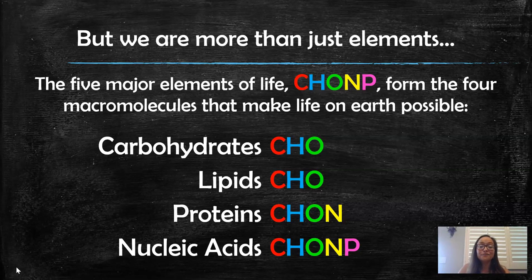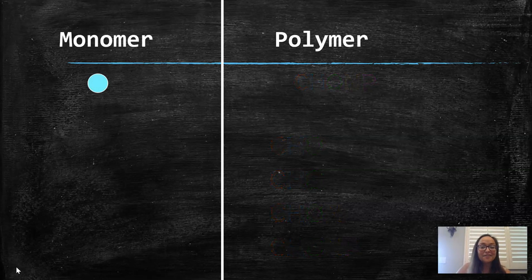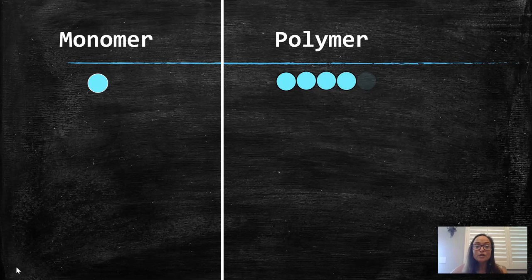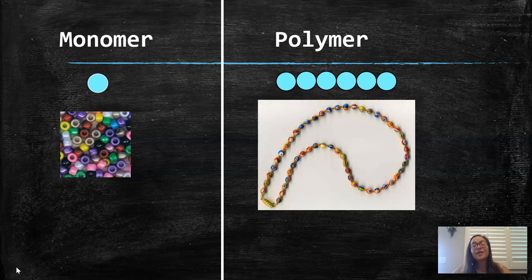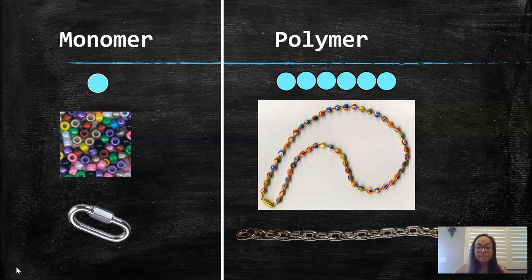Each of these four macromolecules will be studied in detail throughout the year. Before we talk about them, let's introduce two vocabulary words: monomer and polymer. A monomer is a single building block, while a polymer is a chain of those building blocks — a repeating monomer over and over again. An analogy would be a single bead as the monomer, and all the beads on a necklace as the polymer. Or a single link is the monomer, and a chain link is the polymer.